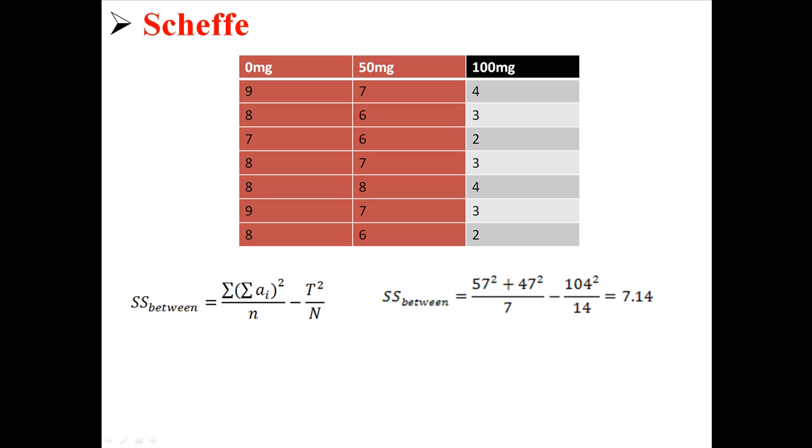So let's say we're comparing 0 and 50. This is how we would calculate the sum of squares between for that. We take the sum for 0 squared plus the sum for 50 squared, divided by n, and then minus t squared divided by n. This is all stuff we already know from the ANOVA, so I'm trying to move quickly. It's more of a review than anything else. That's how you compare 0 and 50. And then you'd get the MS between, 3.57, and then you'd calculate your F for that comparison, 6.26.